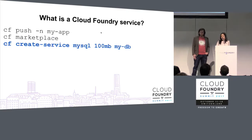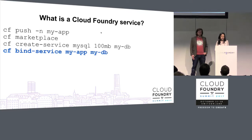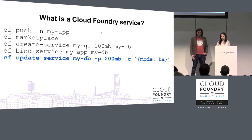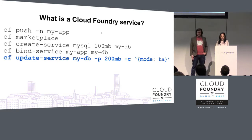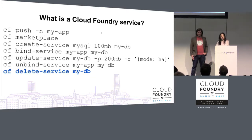Once we've picked our favorite service, we can go ahead and create an instance of it with CF Create Service. We can then bind our application so it can start using it with CF Bind. If we want to change properties or move to a new plan, we can do so with CF Update Service. And finally, when the application no longer needs a service, it can CF Unbind itself, and then we can CF Delete the service.